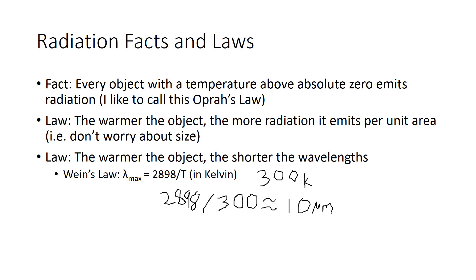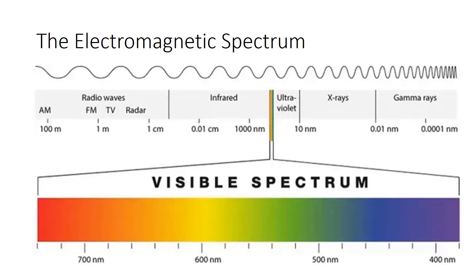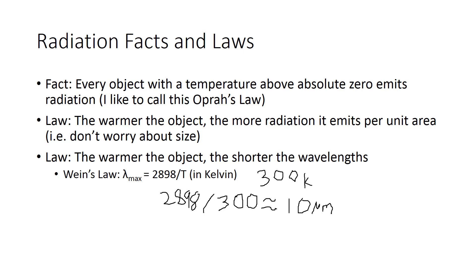Go back to that electromagnetic spectrum image — around 10 micrometers, that's actually around 10,000 nanometers. That's right here, well in the infrared. So we emit infrared radiation. Now what would happen is if our bodies were to heat up hotter and hotter, our wavelength would get shorter and shorter, and maybe at some point we'd be emitting visible light. I always like to tell people: you are radiant, but you are not hot enough to glow.